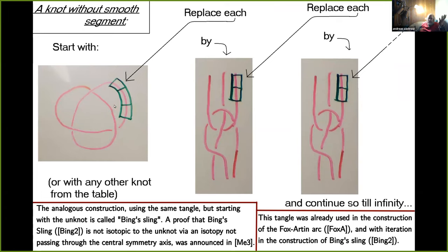This is a very minimal tameness assumption, but knots which do not satisfy this tameness assumption exist. The easiest way to construct this is to start with any knot, plug in this tangle, which has been already used by Fox and Artin to construct the Fox-Artin arc, and do this with infinite iteration. The limit will definitely consist of a knot which does not satisfy the minimal tameness assumption anymore. This construction has also used this tangle with iteration. He started his construction with the unknot and the result is today called Bing's sling, the most notorious candidate for answering the question.